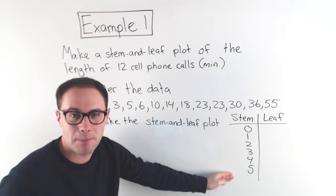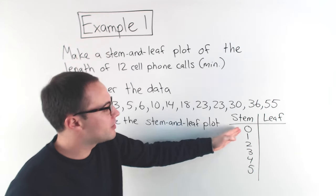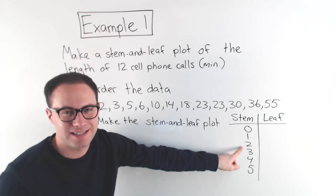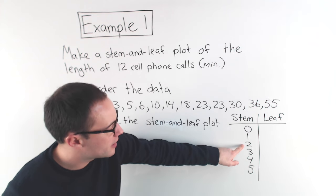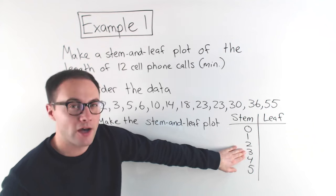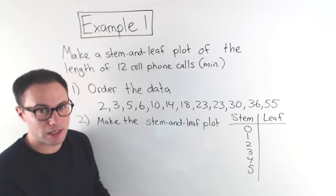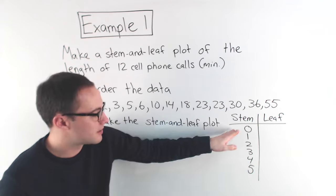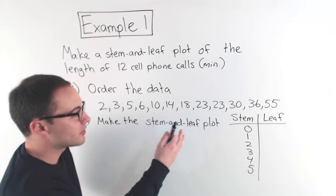Notice, I didn't skip any numbers. When you're making your stem and leaf plot, whatever you decide for your stems, you cannot skip any values. I can't go 1, 2, 3, and then 4, 5, 6. Even if there's no values on that stem, it doesn't matter, you can't skip anything. You've got to go directly in order until you're finished.